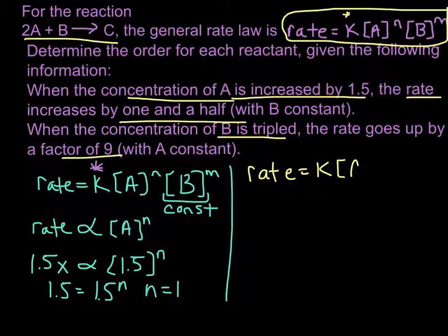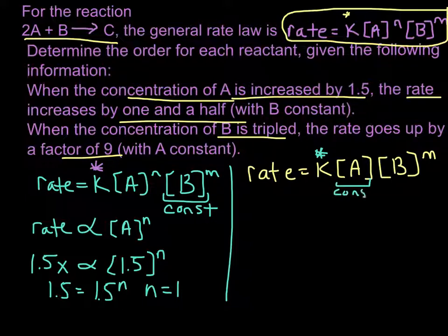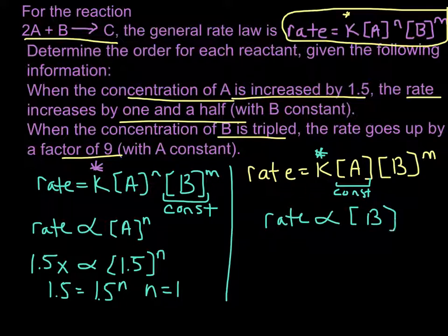So let's rewrite our rate law here. This time I'll go ahead and put in that A is now an order of 1. We still don't know B. And we're going to remember that the rate constant stays constant, of course. A is constant in this problem, so we can ignore it. And so basically, we are going to be looking at rate proportional to concentration of B to the m power.